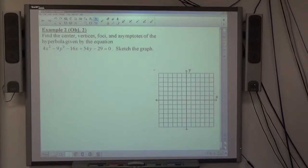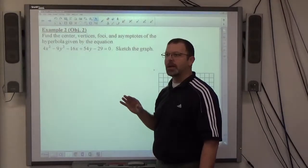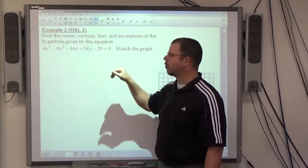Example 2, find the center, vertices, foci, and asymptotes of the hyperbola given by the equation. It's the exact same question. This time we have general form instead of standard form. And again, don't make any decisions about up and down, left to right, while it's in general form.